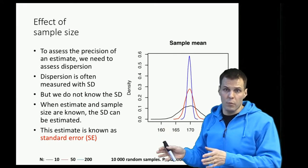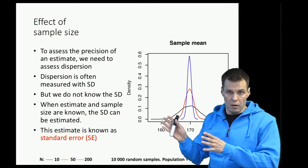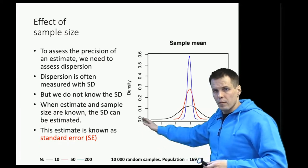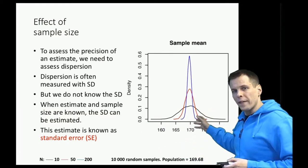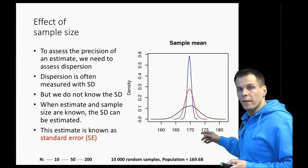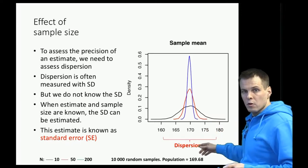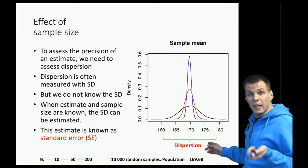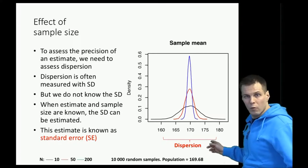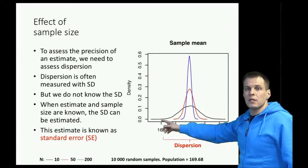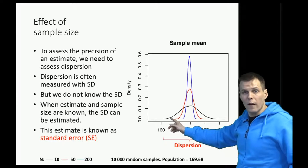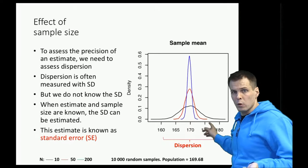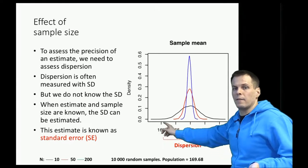That improvement is referred to as the consistency property of an estimator, which I'll discuss on the next slide. To quantify uncertainty we need to quantify the dispersion — specifically, if we were to repeat the study over and over, how much would the estimates vary from sample to sample? We want to quantify the sampling variance of the estimate: how widely the different estimates are dispersed.